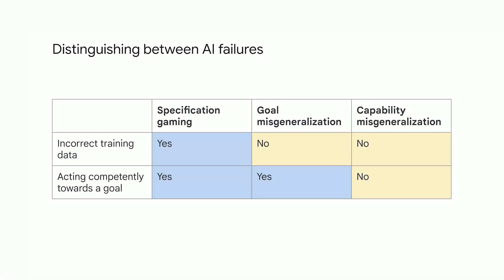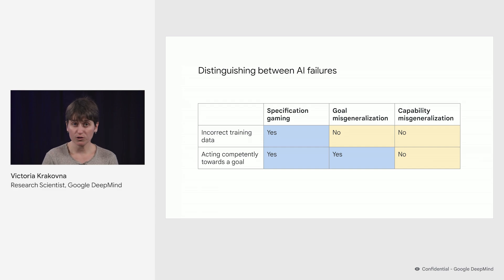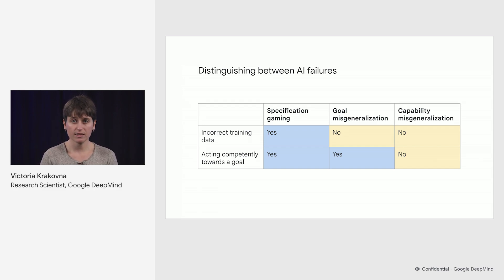Another question is: does the system act competently towards the goal? For specification gaming, the answer is yes, because the system is competently pursuing a misspecified goal. For goal misgeneralization, the answer is also yes, because the system is competently pursuing some unintended goal that is consistent with the training data. But for capability misgeneralization, the answer is no, because it's just behaving incoherently.